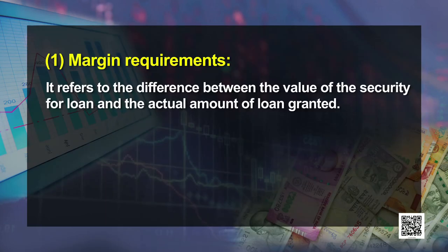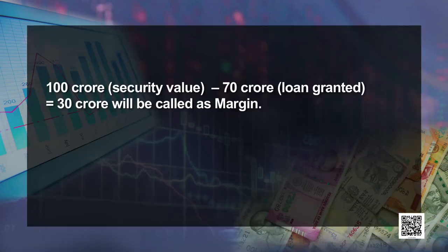Margin requirement refers to the difference between the value of security offered for a loan and the actual amount of loan granted. The margin is the difference between what I offer the bank and what the bank offers me. For example, if I have a property worth 100 crores, the bank won't lend me 100 crores — it will loan me a lesser amount, say 70 crores. The difference of 30 crores, which is 30%, is known as the margin.